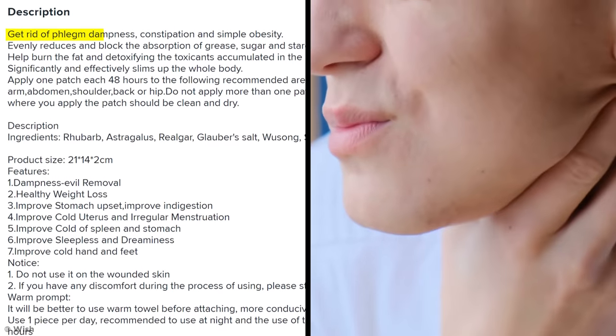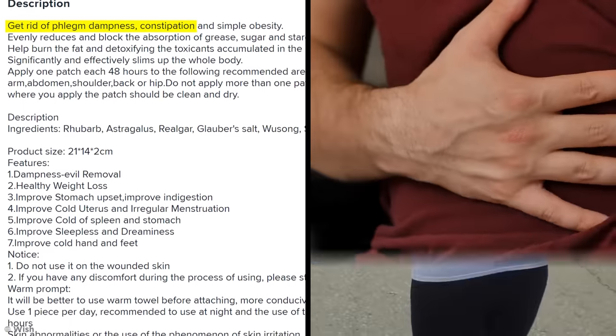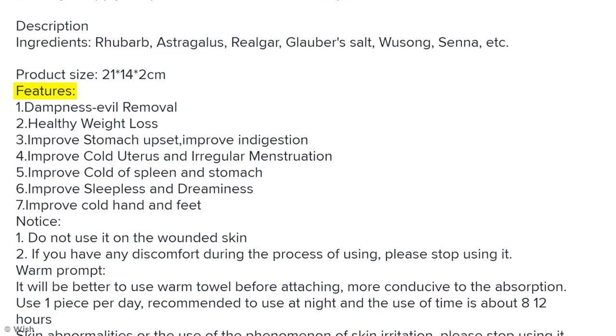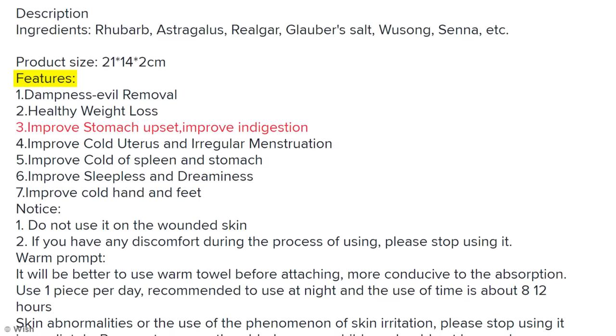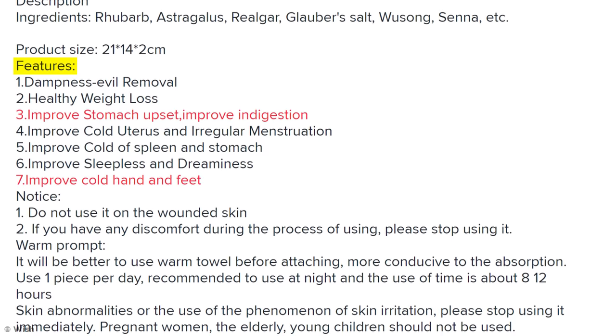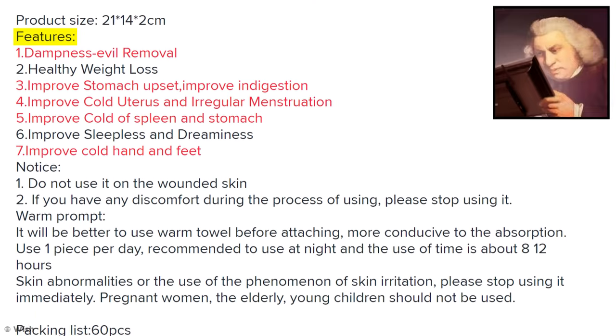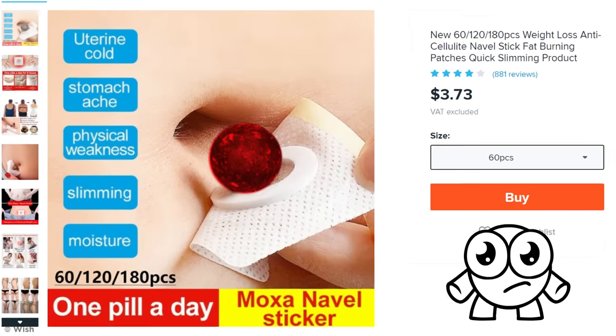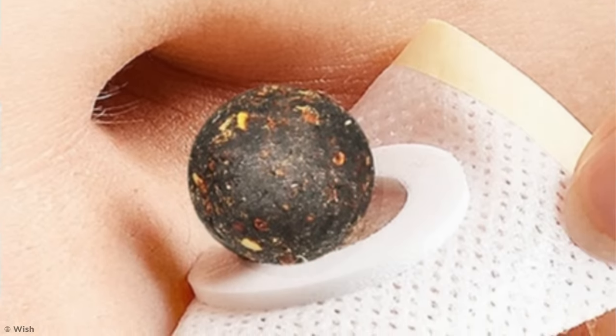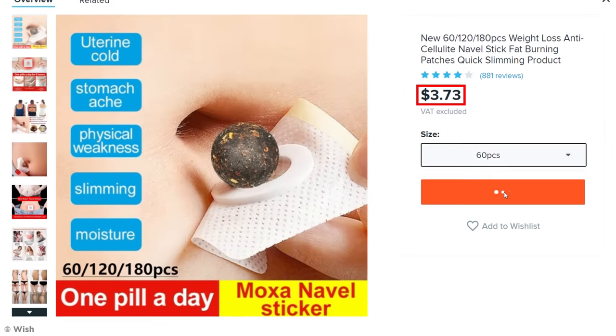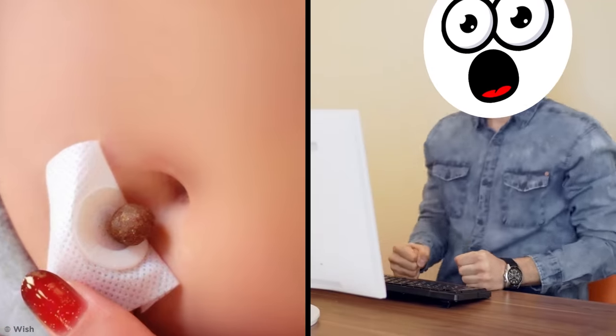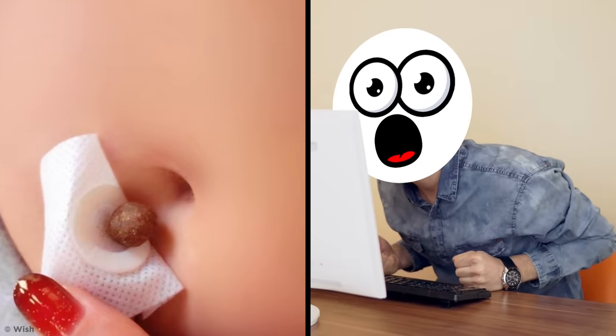Evil Remover. Now, I'm gonna need you to go through the description of this next product with me so that it feels less like I'm having a stroke. It claims that this product helps get rid of phlegm dampness, constipation, and simple obesity. A full list of features reveals it can also help upset stomach and indigestion, improves cold hands, feet, and uterus? Wait. Cold spleen? What? And evil removal! I'm sorry. Evil removal? Alright, I'll bite. What does this thing look like? Is that a ball of wax you stick into your belly button? You know what? For three dollars and seventy-three cents, insta-buy. I was kinda hyped for this super weird, evil-removing, uterus-chilling, slim-fast solution to arrive.